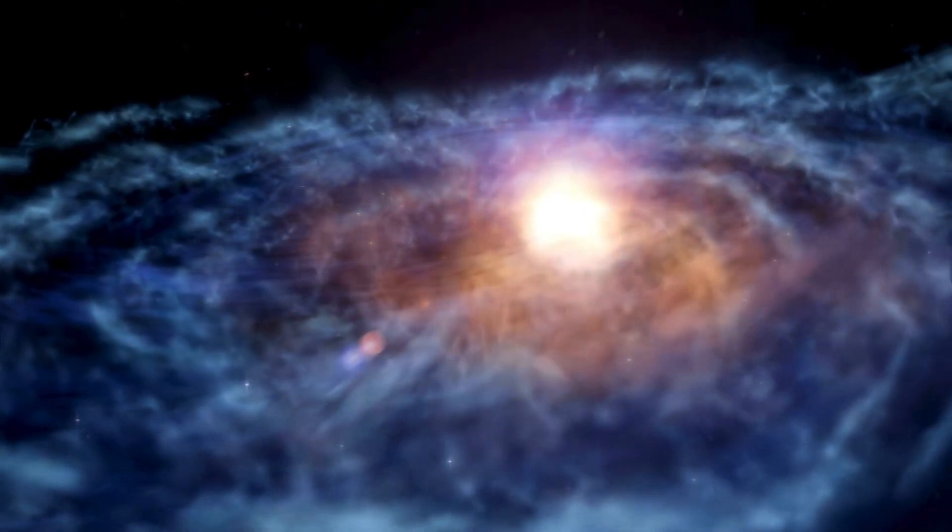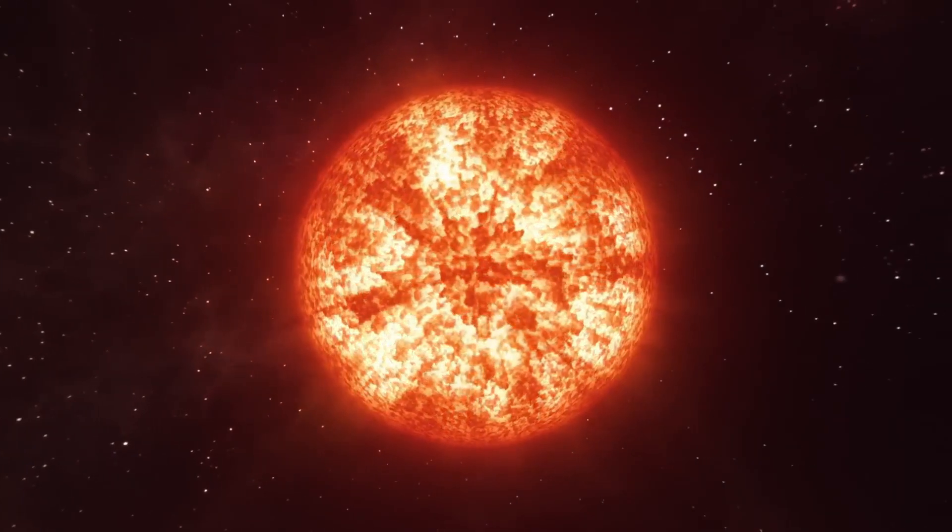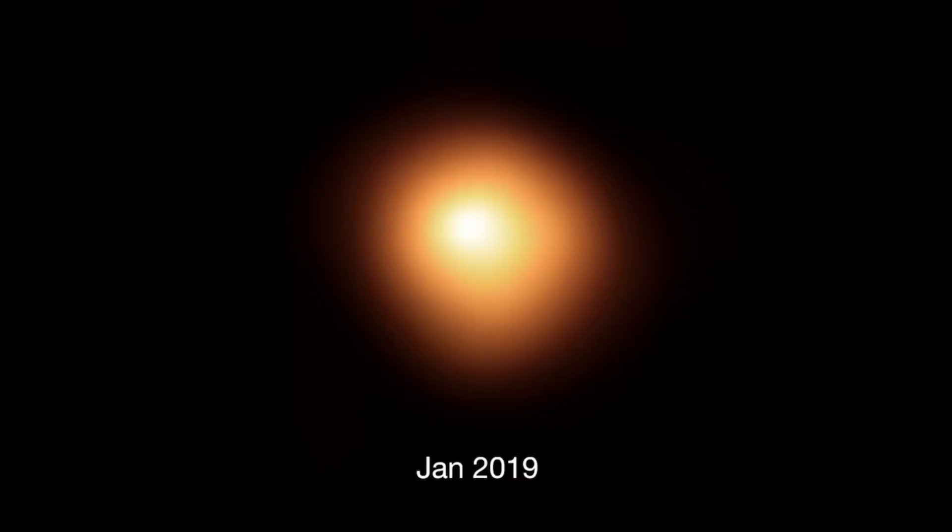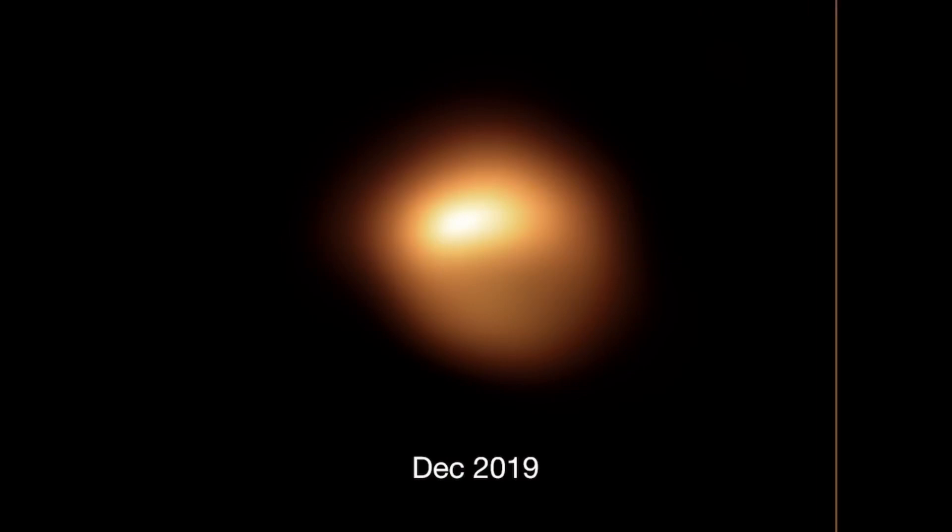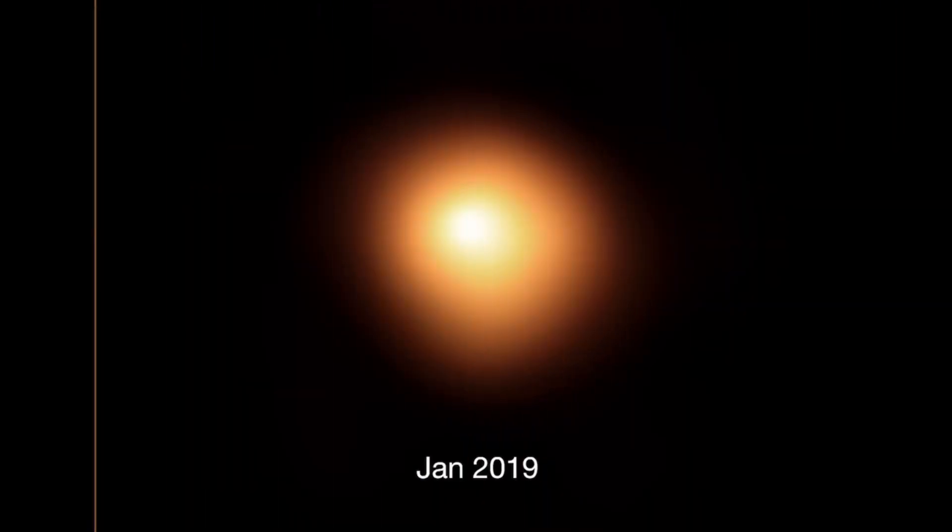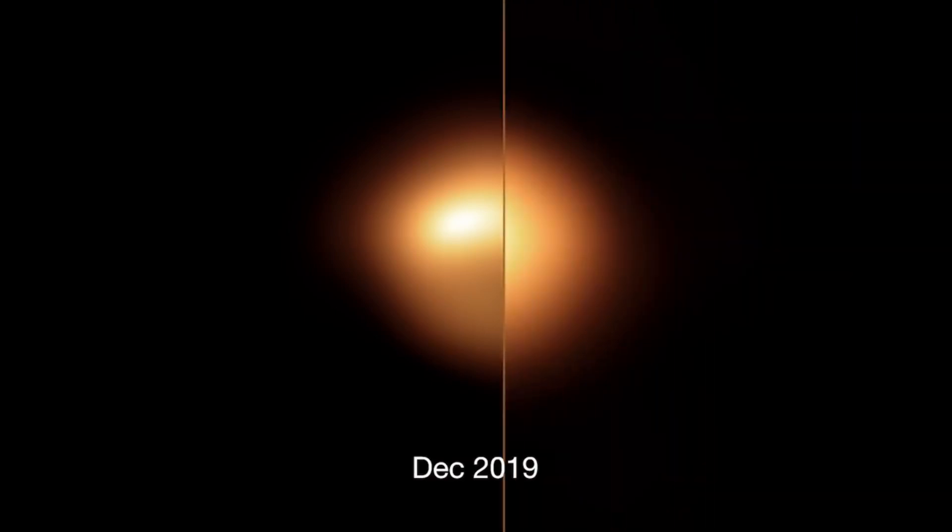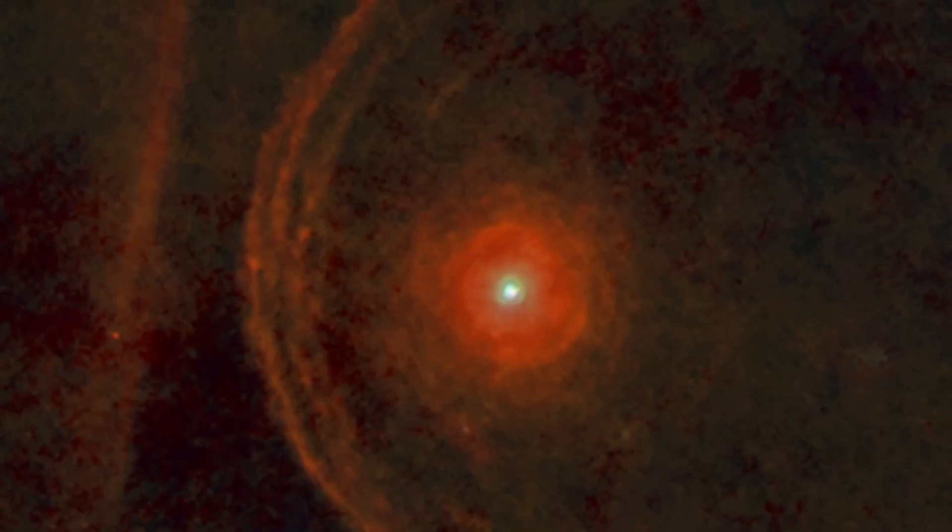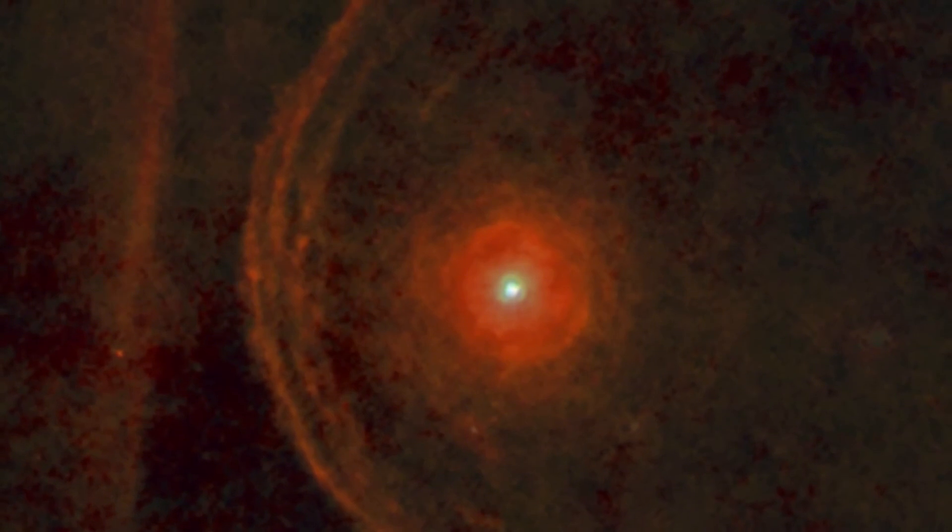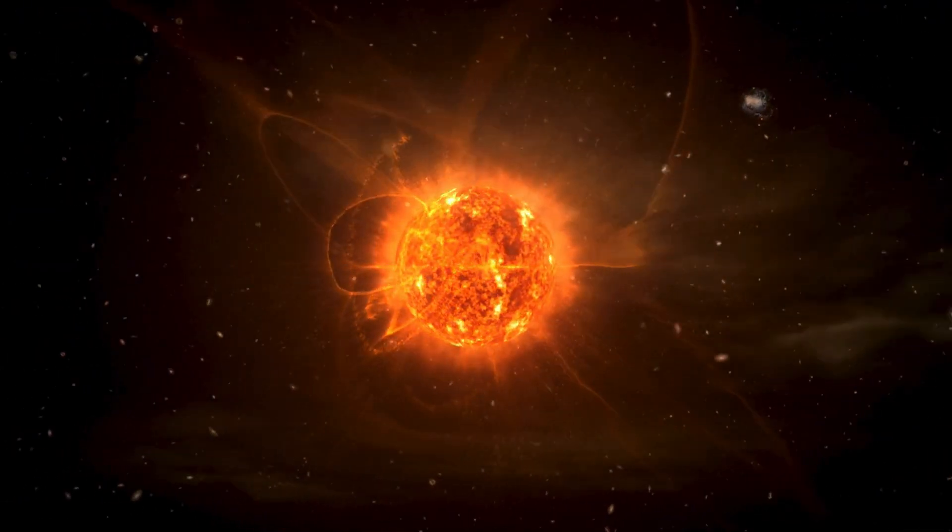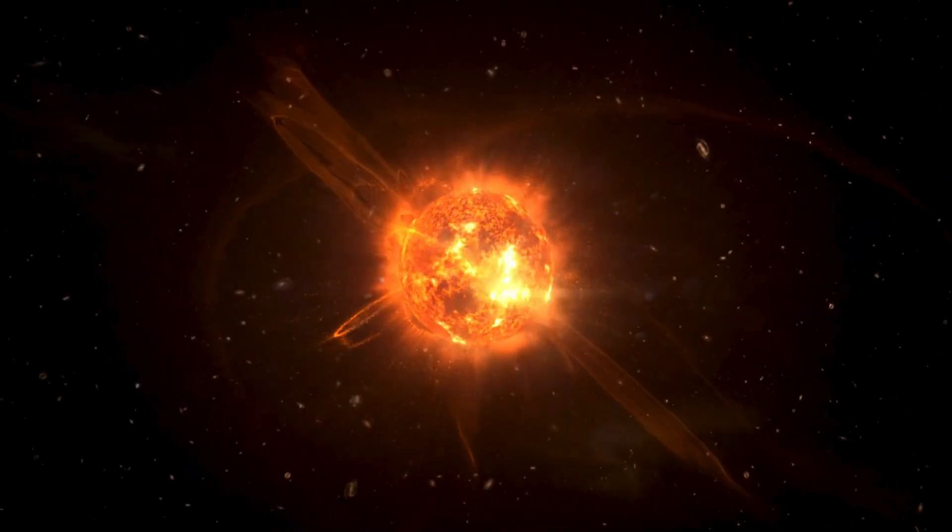As is common in red supergiants, Betelgeuse's structure has become increasingly unstable, causing marked variations in its brightness. A notable example occurred between the end of 2019 and the beginning of 2020, when the star experienced an abrupt drop in luminosity, about a 37% decrease, the largest change recorded in over a century. This episode sparked global interest among the astronomical community, which began investigating the possible causes of this drastic change, offering an unprecedented glimpse into the dynamic processes occurring in the final stages of such a massive star.